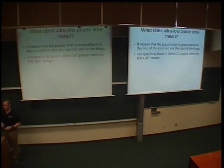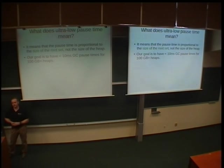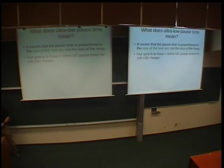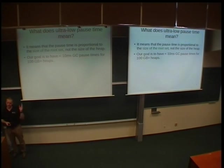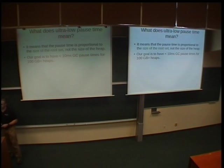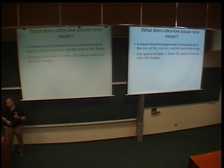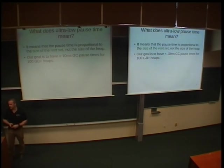The goal of Shenandoah is to provide ultra-low pause time when the garbage collector tries to manage the Java heap. The pause time should be proportional to the size of the root set, which I will show on the next slide. The other goal is to have very low pause times, usually less than 10 milliseconds, for very large heaps which can be larger than 100 gigabytes to 1 terabyte.